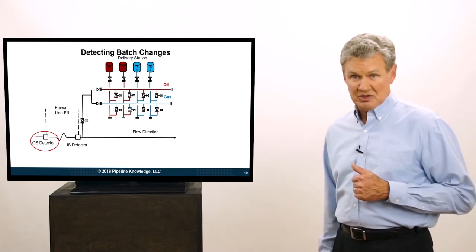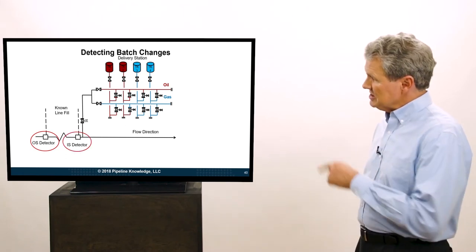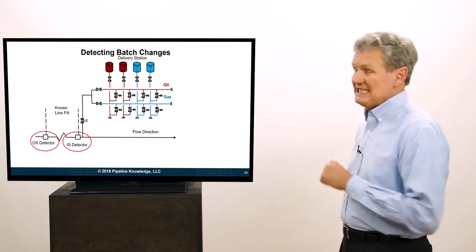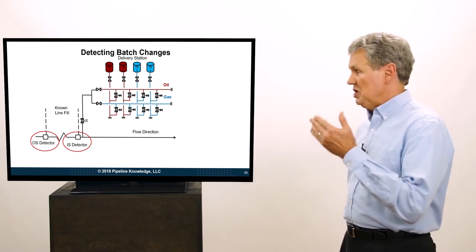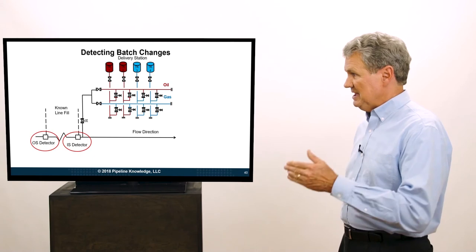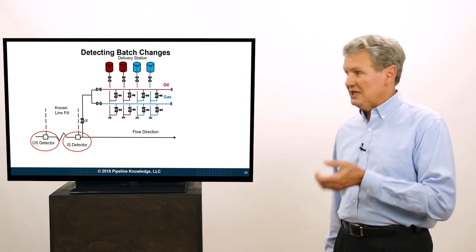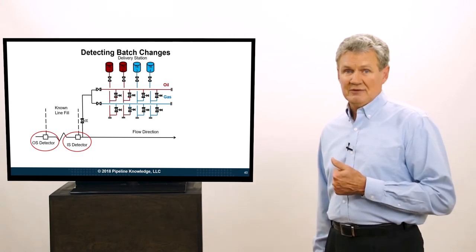And we know the distance between the outstation and the in-station detector, so we know when it's going to arrive in the in-station. So we're keeping track of this interface to then determine when we're going to deliver in.